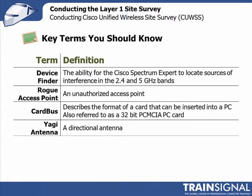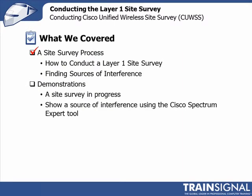The last term is a Yagi antenna. This is a form of directional antenna, and if you want to replace the Omni antenna on your Cisco Spectrum Expert, using a Yagi antenna is the best way to go. They're fairly inexpensive and highly directional, so if you're trying to find sources of interference with a directional antenna, a Yagi is well recommended.